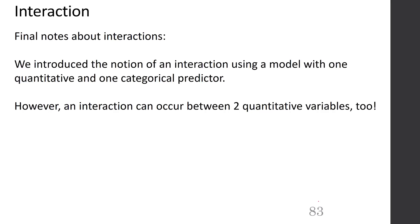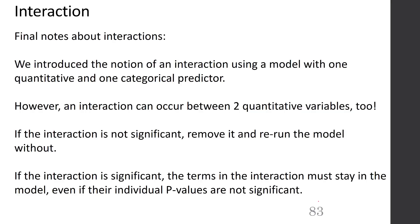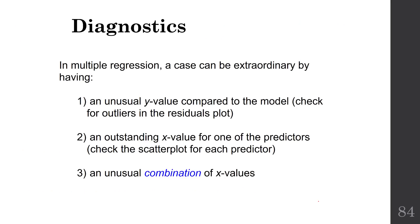Now let's give you some final notes about interactions. We've introduced the notion of an interaction using a model with one quantitative and one categorical predictor. However, an interaction can occur between two quantitative variables, too. If the interaction is not significant, you can remove it and rerun the model without it. But if the interaction is significant, the terms of the interaction must stay in the model even if their individual p-values are not significant.